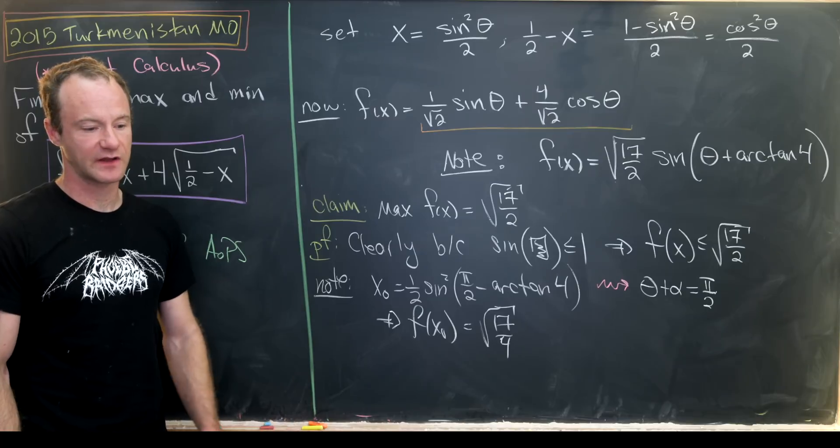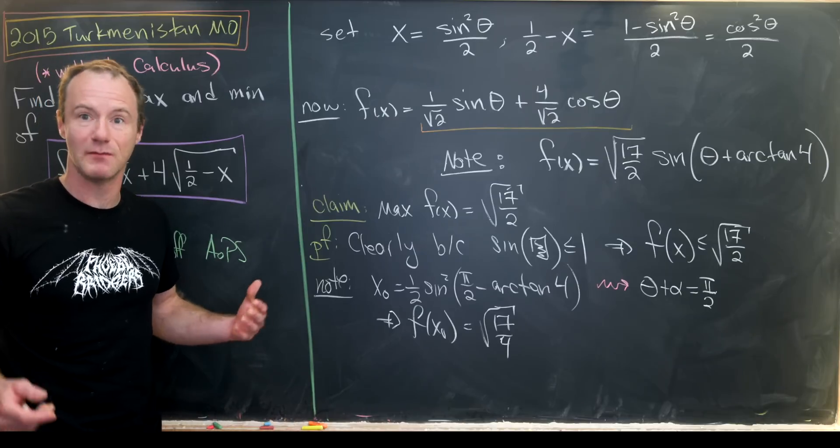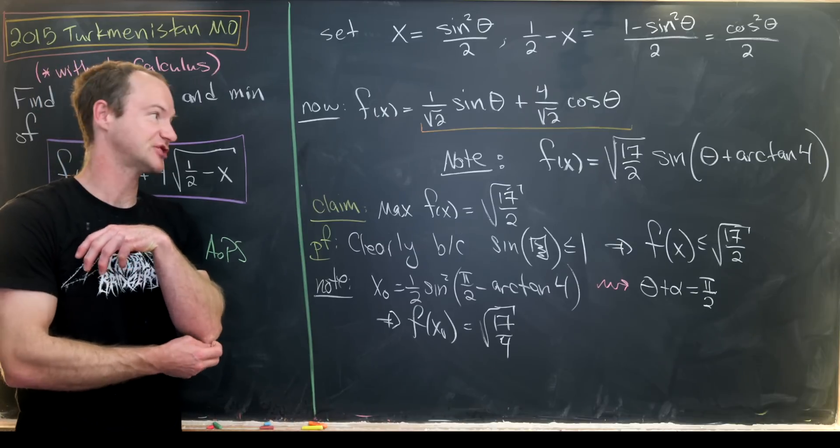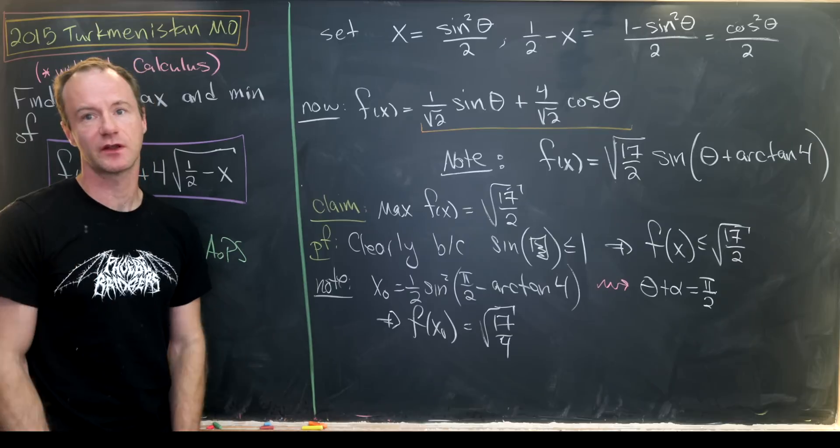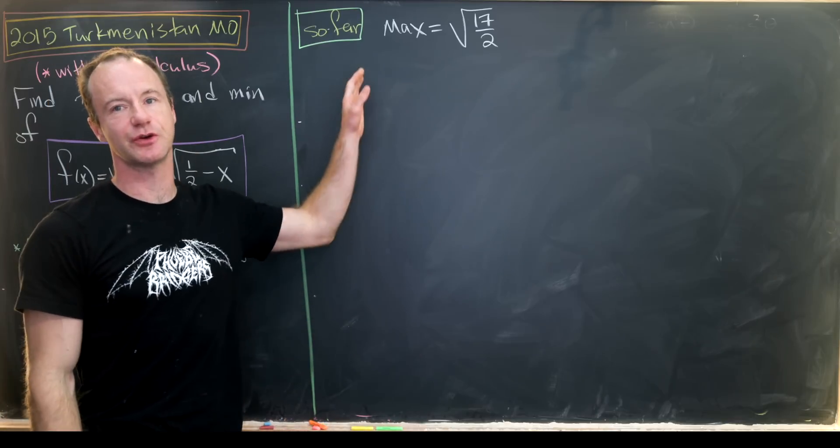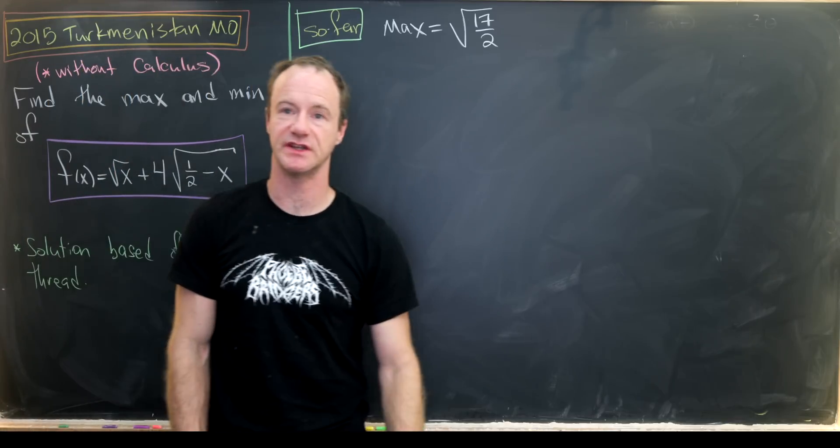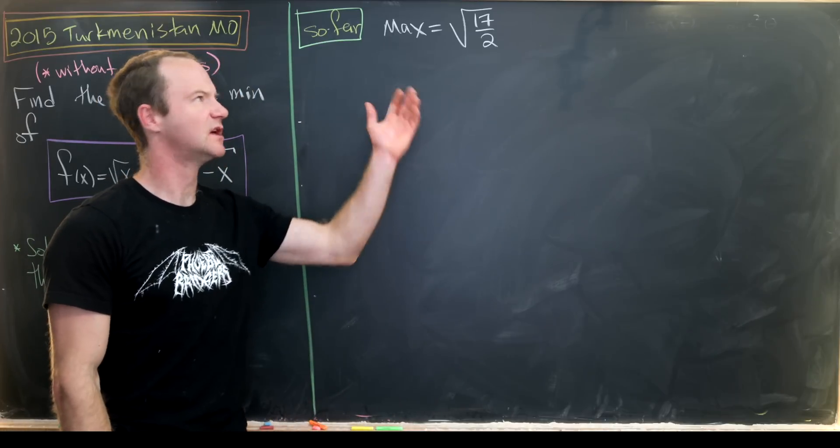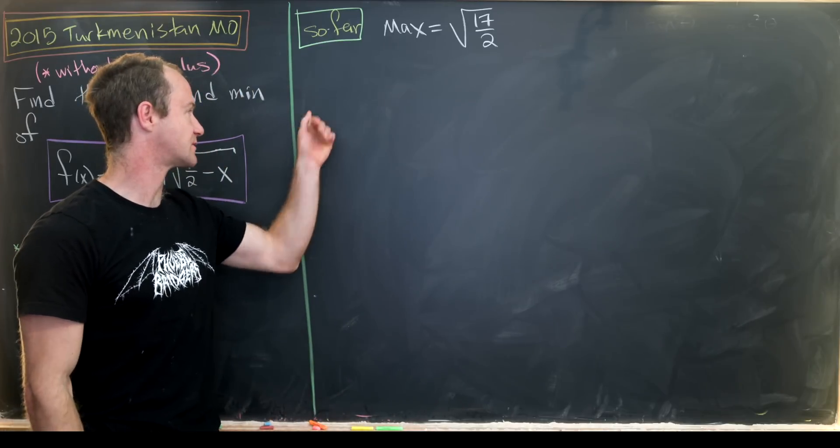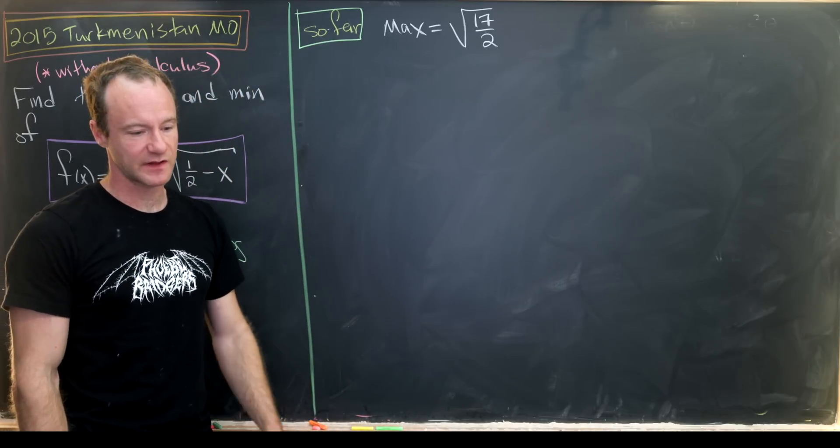So now let's go ahead and calculate the minimum, but we're going to do that in a much shorter way and actually not using trig functions, just for a little bit of variety. So we just finished showing that the maximum of our function is equal to the square root of 17 over 2. I fixed a bit of a typo that was on the last board.